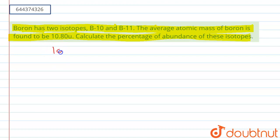Consider we have 100 percent total abundance. Now we have one isotope that is B-10 which has a molecular mass of 10 grams.